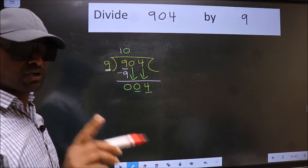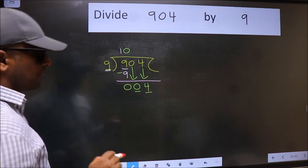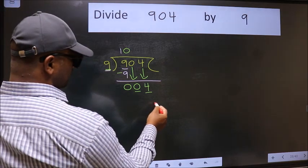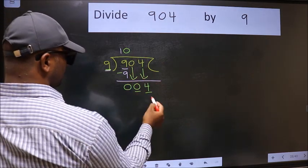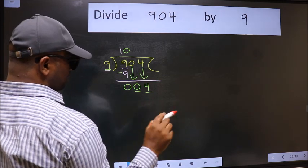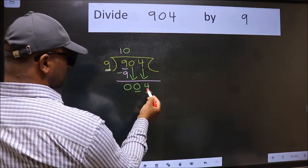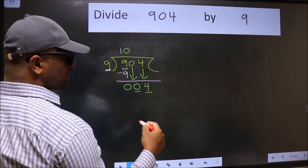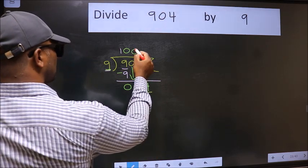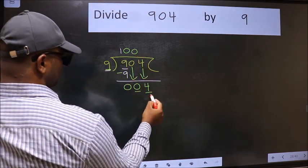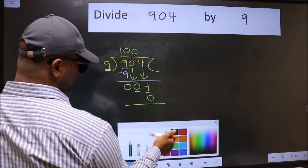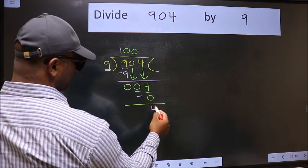Instead of that, what you should think of doing is which number should we take here? If I take 1, we will get 9. But 9 is larger than 4. So what we should do is we should take 0. So 9 into 0 is 0. Now we should subtract. We get 4.